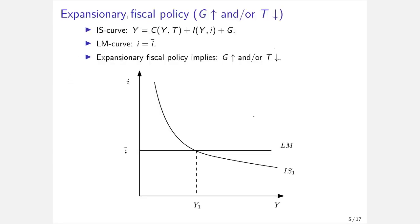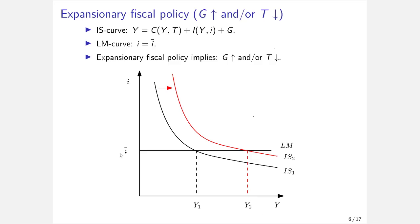The first scenario is expansionary fiscal policy — either an increase in governmental consumption expenditures or a decrease in taxes. The IS curve consists of household consumption, firm investment, and government expenditures, while the LM curve fixes the interest rate at I-bar. When the government raises G or decreases T, the IS curve shifts to the right, yielding a new equilibrium where both markets clear at the higher output level Y2, with the interest rate still at I-bar.